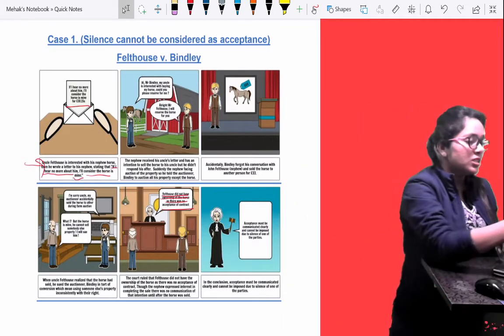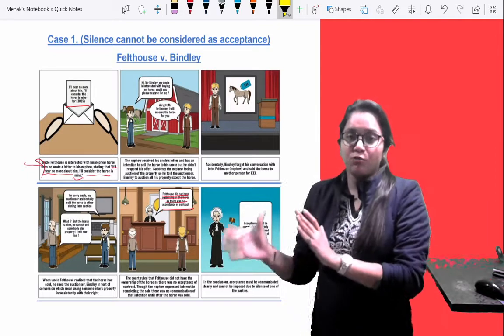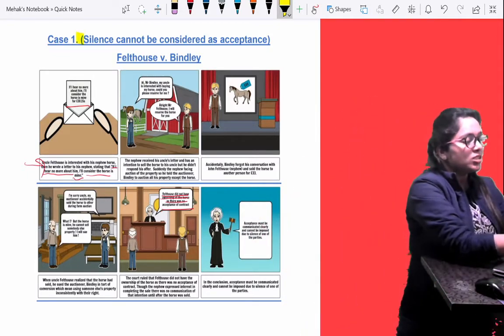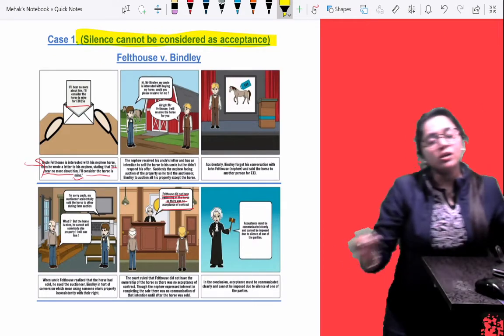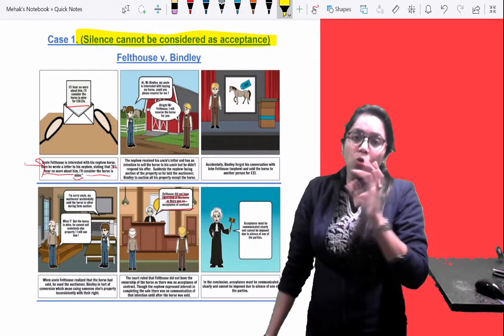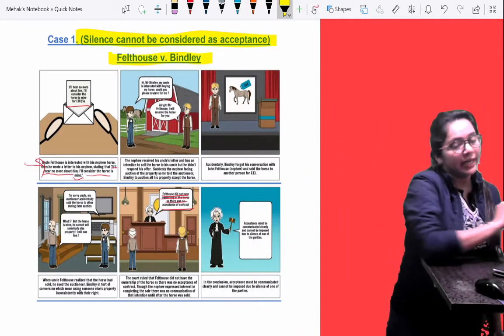We have divided these cases so that you can refer to them for the respective questions. The first case is that silence cannot be considered acceptance. This is a very famous case, Felthouse v. Bindley.